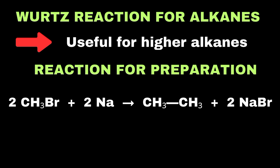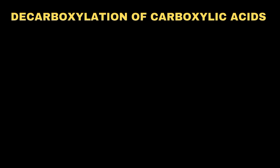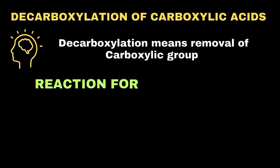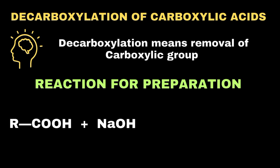Alkanes can also be prepared from the decarboxylation of carboxylic acids. Decarboxylation means the removal of the carboxyl group, and removing it results in the formation of an alkane. This reaction happens when the sodium salt of carboxylic acids reacts with sodalime. For instance, one mole of sodium acetate reacts with sodium to form one molar concentration of methane and sodium carbonate.